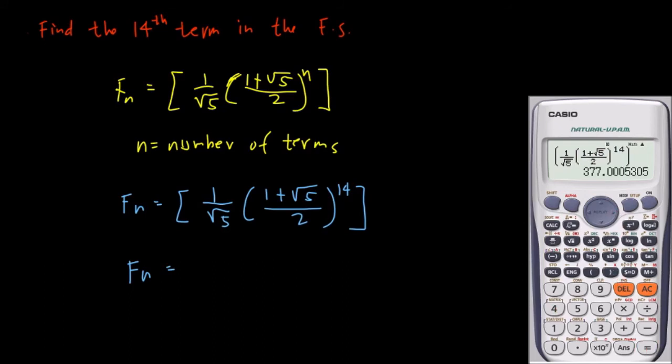So this formula is just an approximation. We could round to the next whole number which is 377.